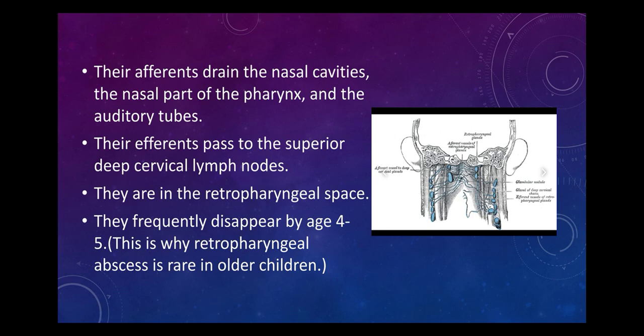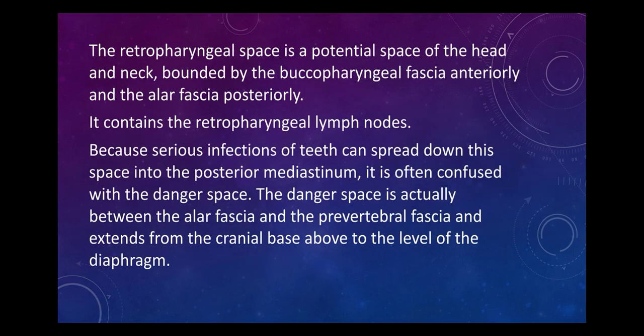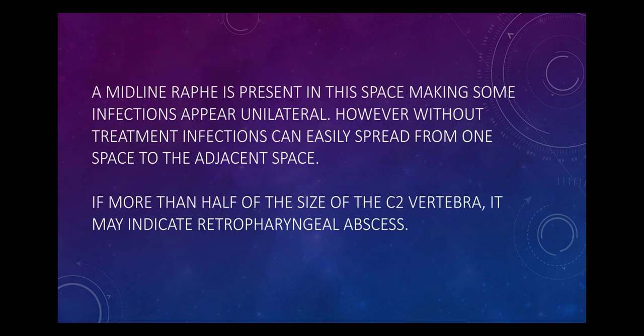These nodes are in the retropharyngeal space and disappear by the age of four to five, which is why retropharyngeal abscesses are rare in older children. The retropharyngeal space is a potential space of the head and neck bounded by the buccopharyngeal fascia anteriorly and alar fascia posteriorly. Because serious infections of teeth can spread down this space into the posterior mediastinum, it is often confused with the danger space, which is actually between the alar fascia and the prevertebral fascia, extending from the cranial base above to the level of the diaphragm below.